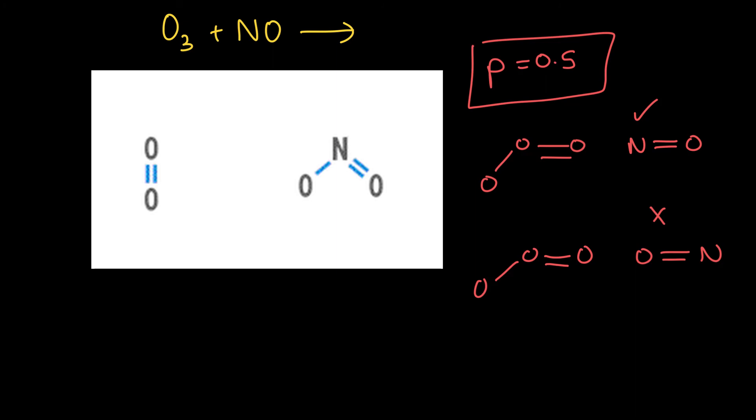We can say that the probability that they collide with the right orientation is about 50% or about 0.5. So it's not just the number of collisions per second. If these molecules collided, say, 10 times every second, only half of the collisions would actually be capable of reacting, even if they came together with the activation energy.